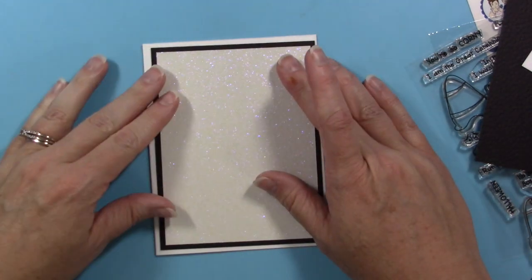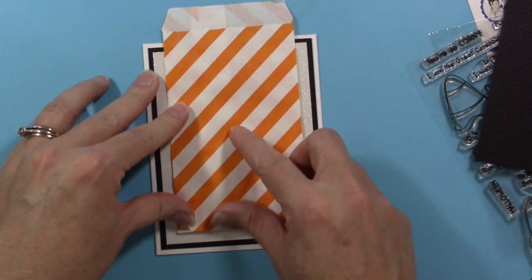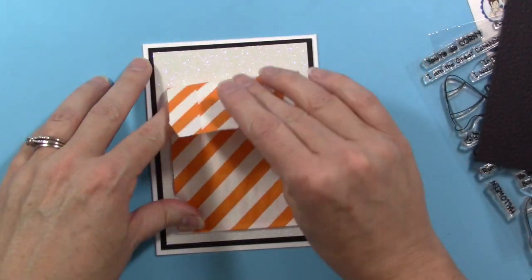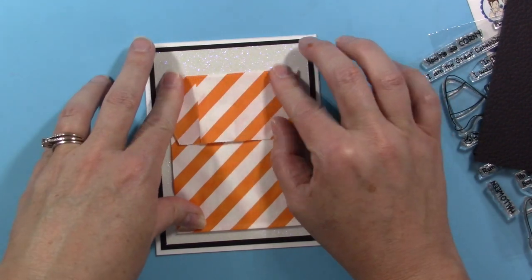I'm cutting them so they can layer. The card is an A2 size card, so the black paper is 5 and 1/4 by 4, and the white is 3 and 3/4 by 5. I'm also going to be taking this little gift bag and cutting the top of it.